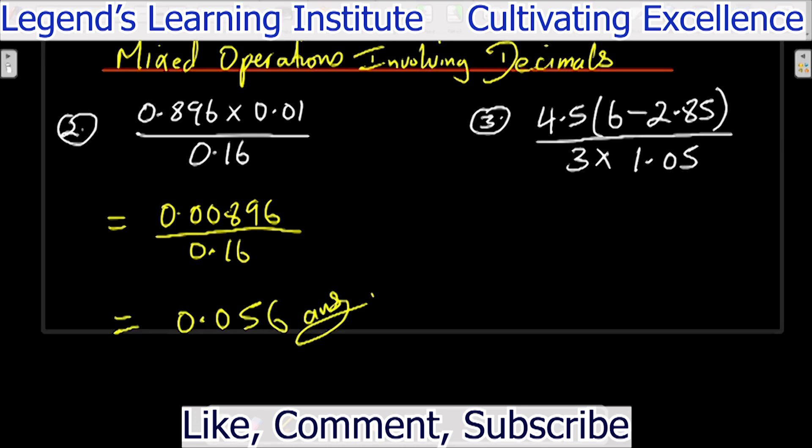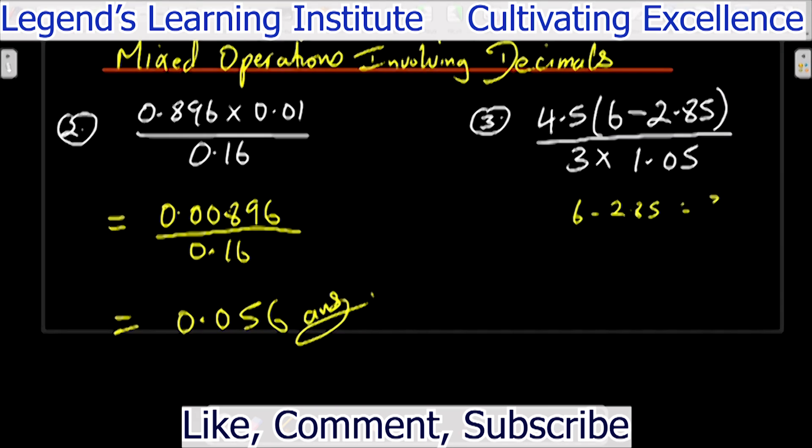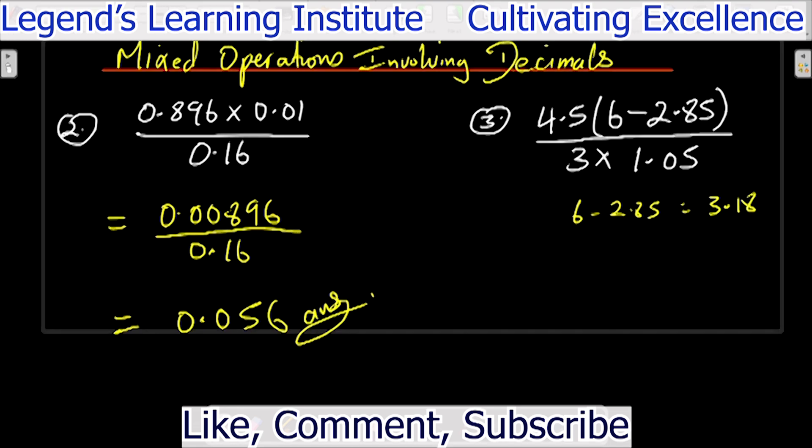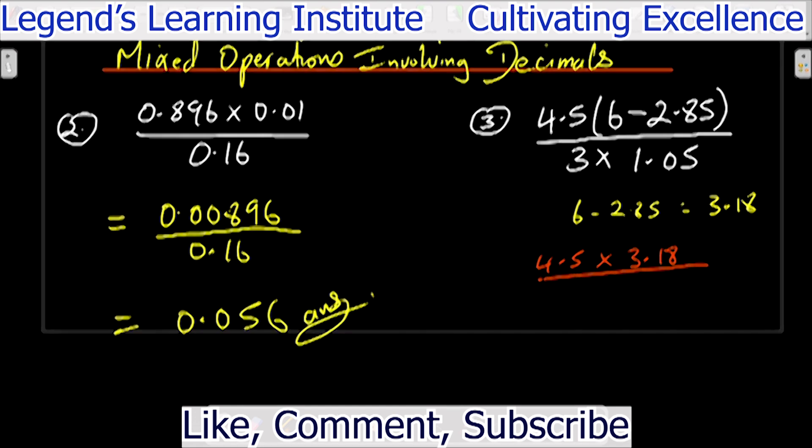Number 3 we have 4.5 open bracket 6 minus 2.85 over 3 times 1.05. We do what is inside the bracket first in the numerator there. So 6 minus 2.85 that's equal to 3.18. So then we would get 4.5 times 3.18 because bracket means to multiply. So 4.5 times 3.18 divided by 3 times 1.05. 3 times 1.05 that's 3.15.